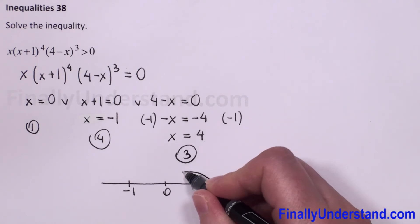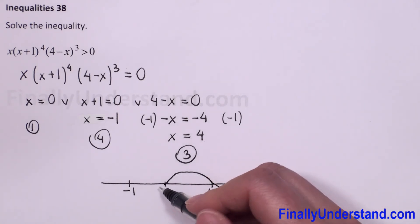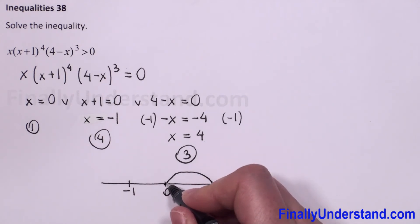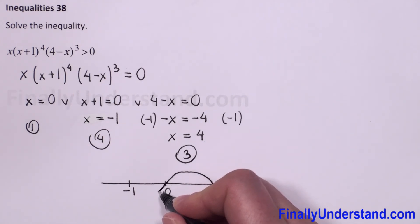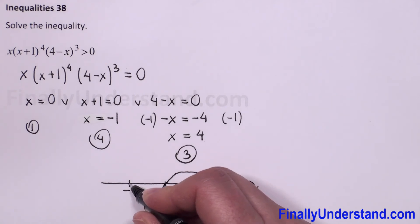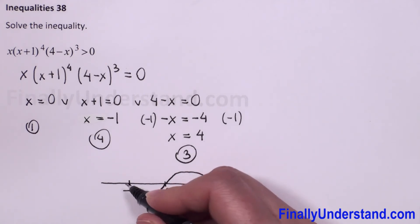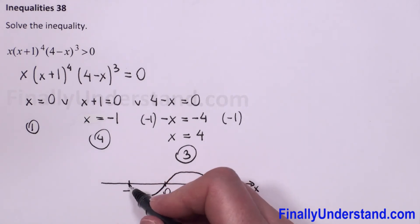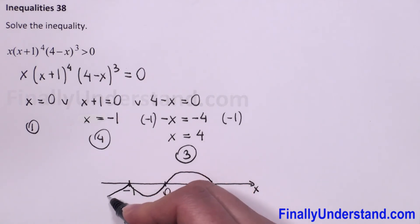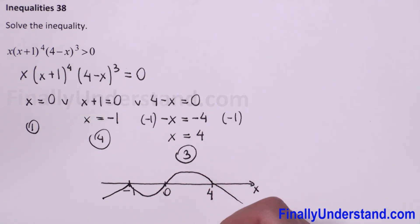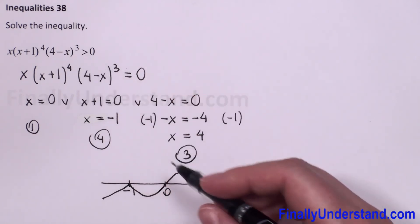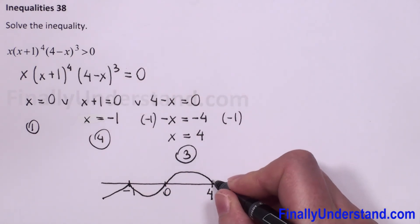We go up to 4 — since 4 repeats three times (an odd number), we pass through it and continue toward 0. Zero repeats one time (also odd), so we pass through zero and go toward negative 1. Negative 1 repeats four times (an even number), so we cannot pass through negative 1 — the graph bounces back down.